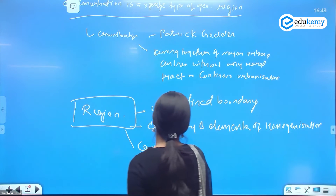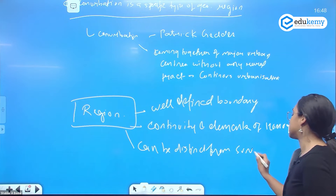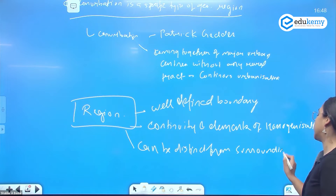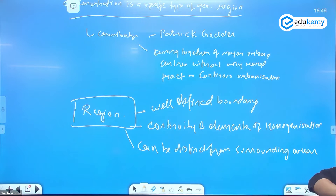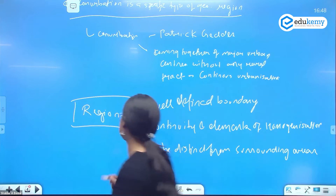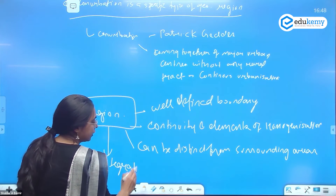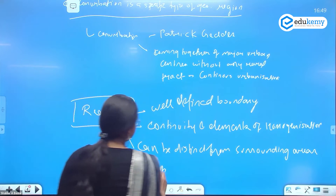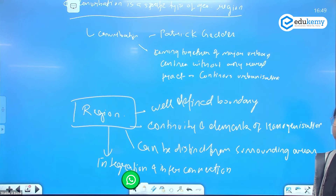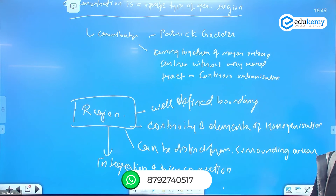A region can be distinguished from the surrounding areas. Under homogeneity, there is integration and interconnection between elements. Now I have to look at conurbation from all these four dimensions — only then can I say yes, it is a particular geographical region.